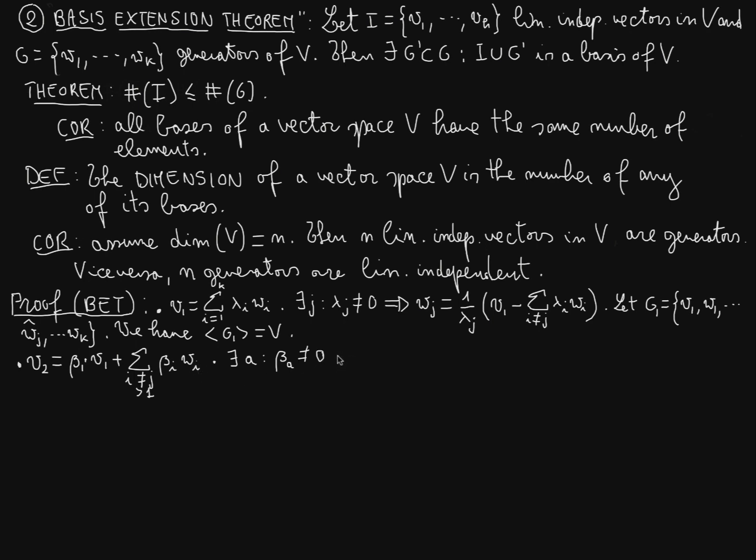So as before, this implies that we can express w_a as a linear combination: one over beta a that multiplies v2 minus v2 minus beta 1 v1 minus linear combination of certain indices. This is a linear combination of w_a in function of v2, v1, and the remaining vectors w_i. Therefore we can replace w_a in function of all these vectors and we will still have a set of generators.